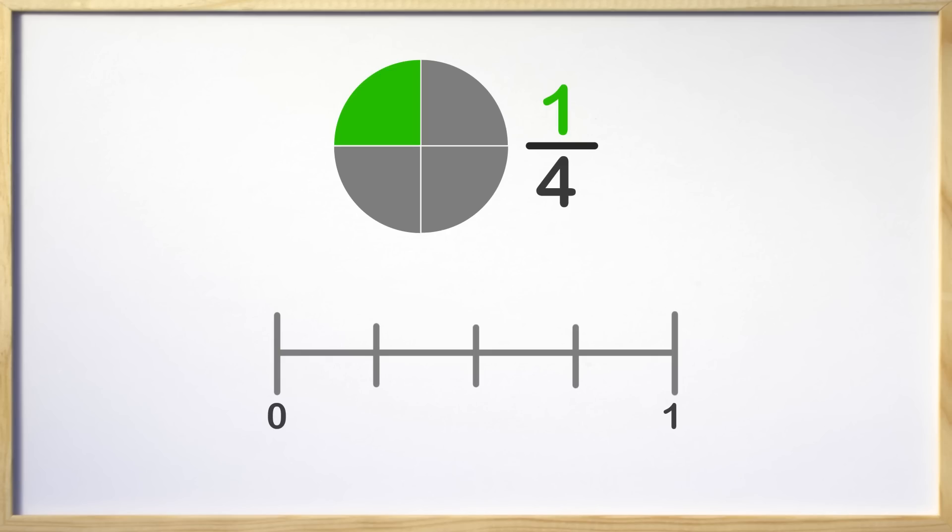This number line is broken into four equal parts. From here to here is one fourth. From here to here, we have two parts, which is two fourths. From here to here, we have three parts, or three fourths. From here to here, we have four parts, or all of them, which is four fourths, or one, like we just talked about.